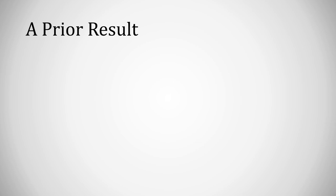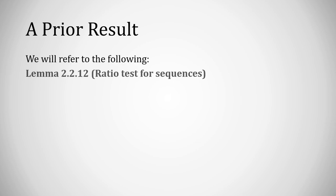So we're going to rely on a prior result here, specifically lemma 2.2.12, the ratio test for sequences. Now, compared to the original way it's written, I've changed x's to y's so we don't confuse it with the sequence xn from the beginning of the problem.